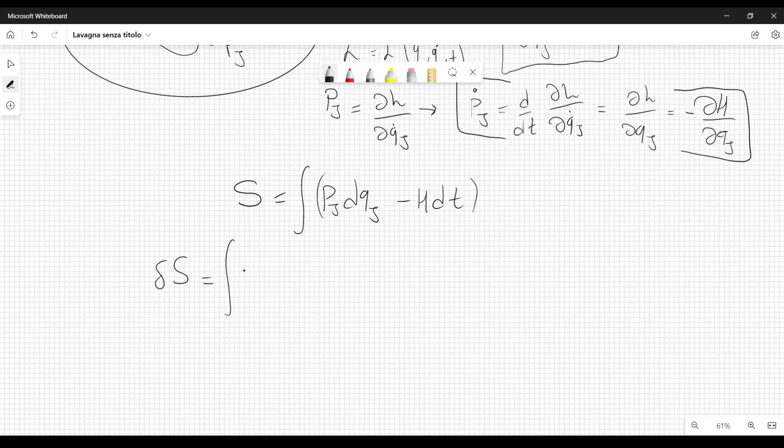So when we take this variation, we get variation of p j times dq j plus p j, differential of the variation of q j minus, then we have the variation of the Hamiltonian, which can be written as the derivative of the Hamiltonian with respect to q j,